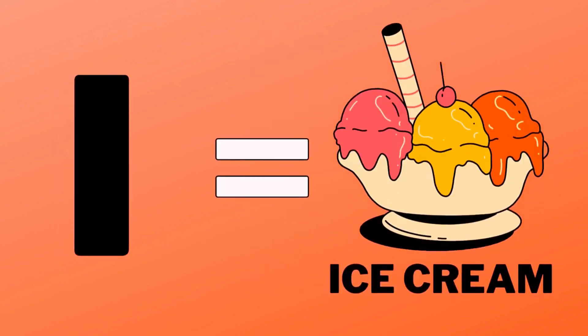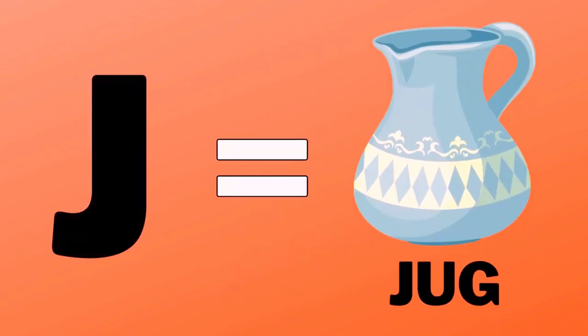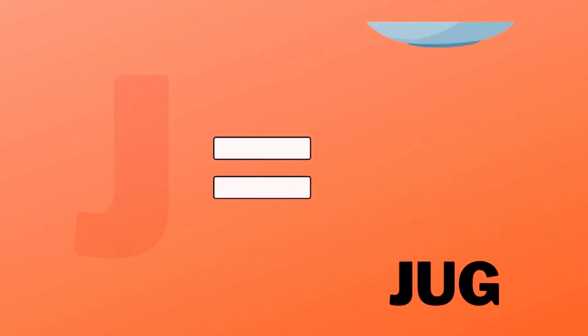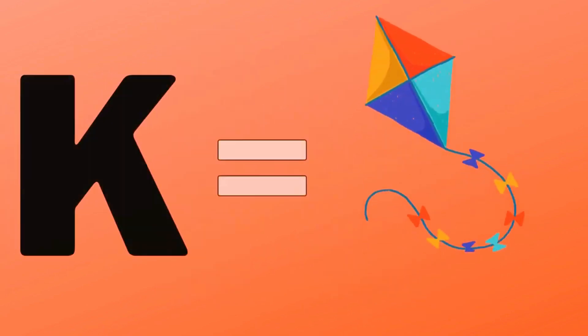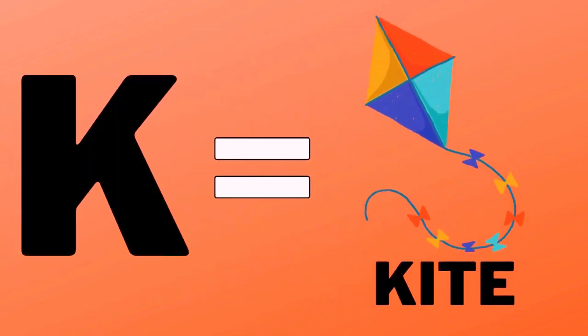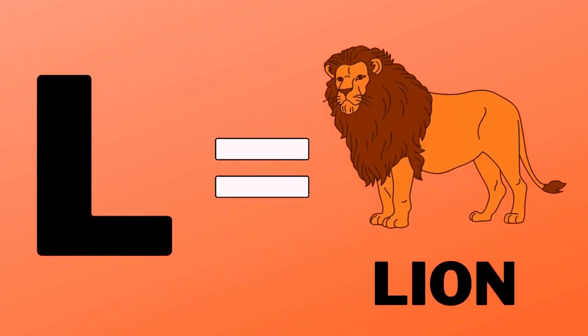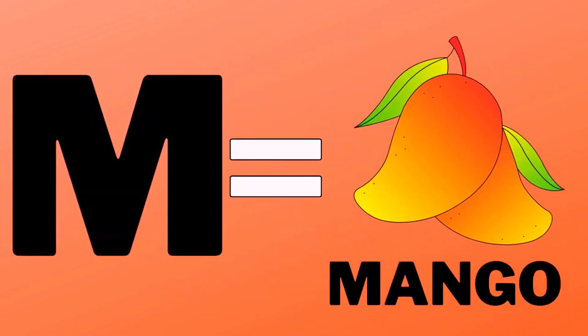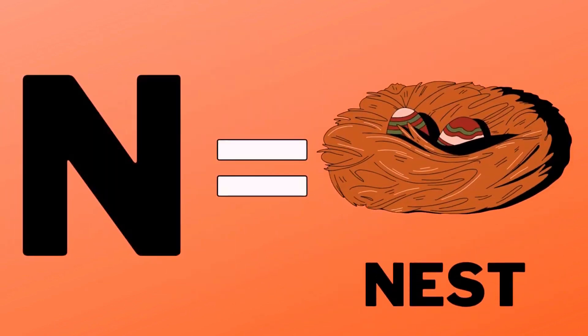I for ice cream, J for jug, K for kite, L for lion, M for mango, N for nest, O for orange.